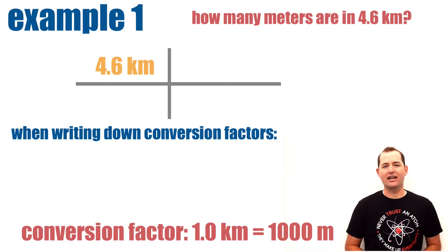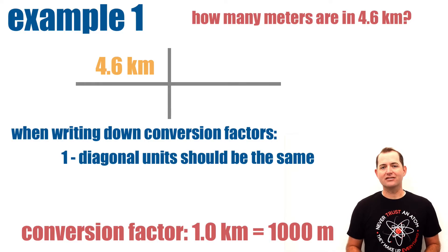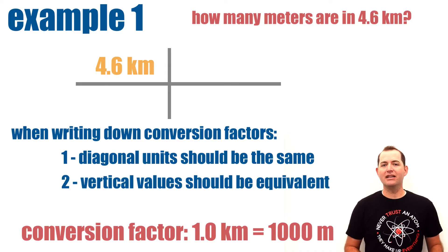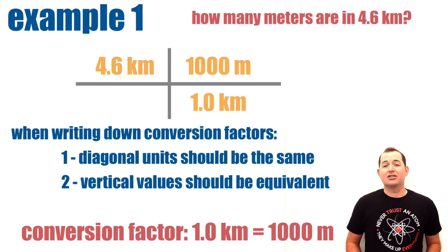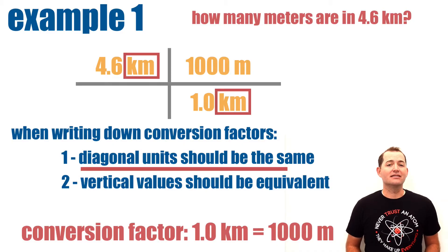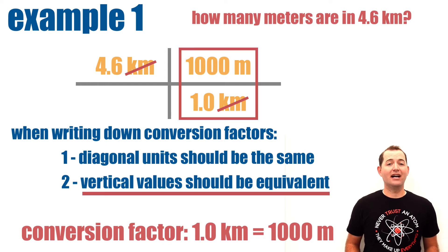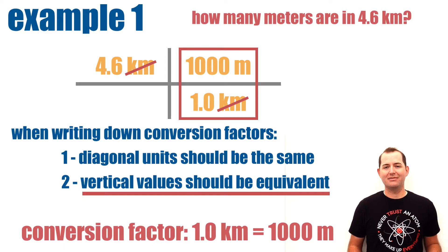When we write down our conversion factors, it's important to remember two principles. Diagonal units should always be the same and vertical values should be equivalent. This means that when we place our conversion factor, the 1 kilometer must go in the denominator. This ensures that our diagonal units are the same and will cancel, and the vertical values 1000 meters and 1 kilometer are equivalent or they are the same size.